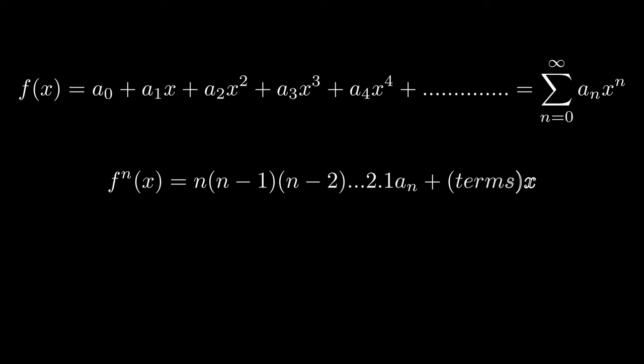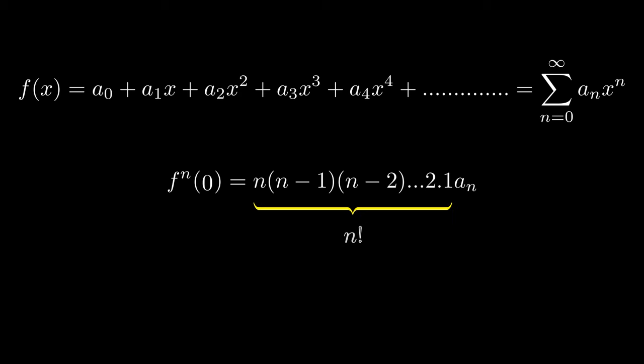If you plug in 0, all terms become 0, and only the term remaining is a_n with some numbers multiplied to the front. And the multiplied numbers are nothing but n factorial.